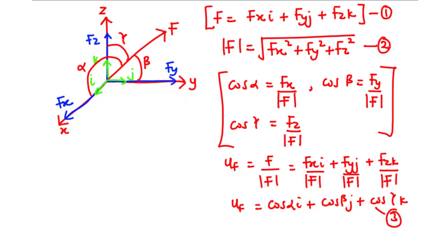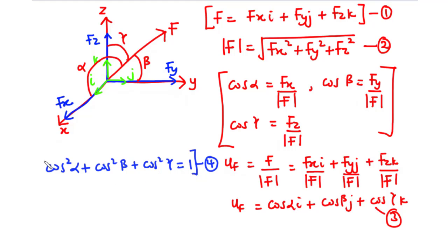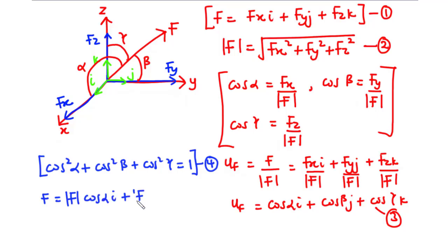When two of the direction angles are known, we can find the third direction angle using the formula: cos²α plus cos²β plus cos²γ equals 1 — let's call this equation 4. Finally, a force can be represented in Cartesian vector form by multiplying the unit vector by the magnitude: F equals |F|cosα·i plus |F|cosβ·j plus |F|cosγ·k — let's call this equation 5.